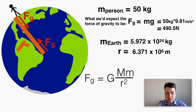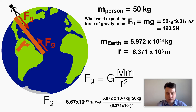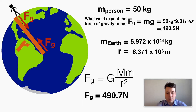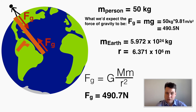Plugging all the numbers into the force of gravity equation gives 490.7 Newtons — nearly identical to our earlier result, with just a small rounding difference. So both force equations work for gravity on Earth, but the new equation works for any two objects anywhere in the universe, any distance apart.